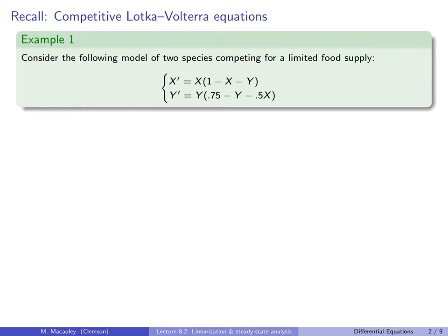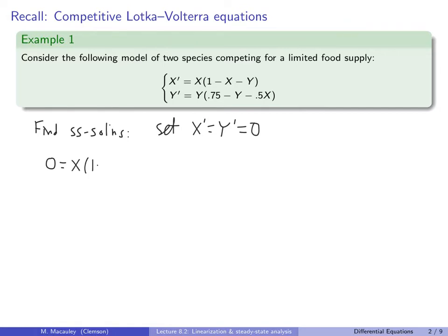The first thing to do is to find the steady-state solutions. To do that, we have to set x-prime and y-prime to zero. That gives us two equations: 0 equals x times (1 minus x minus y), and 0 equals y times (0.75 minus y minus 0.5x).